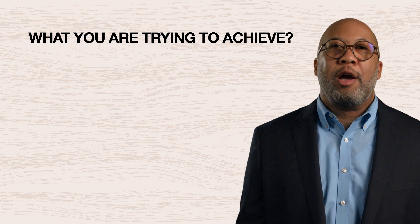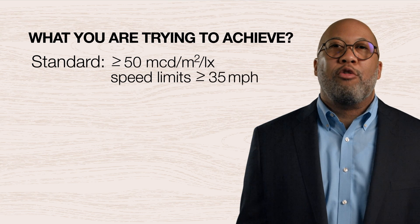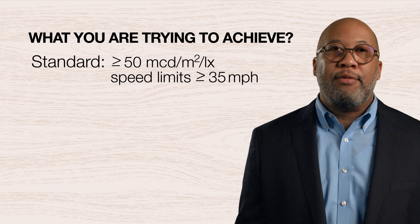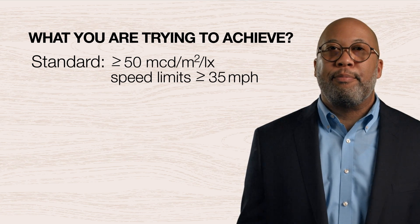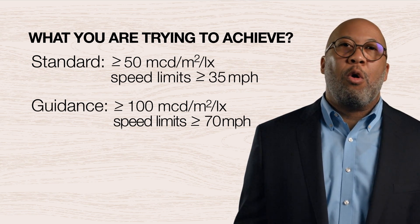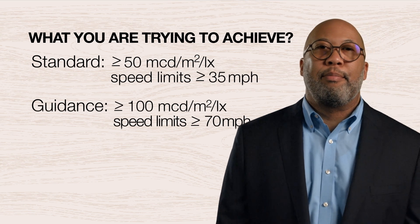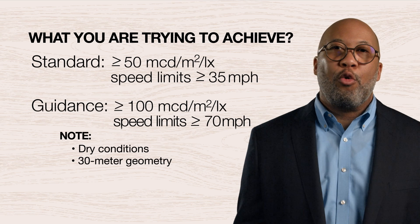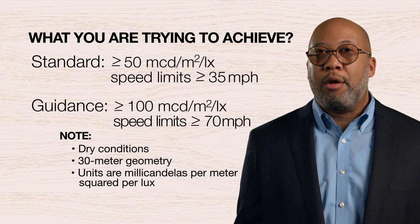Let's briefly discuss what you are trying to achieve with the maintenance method. The MUTCD standard requires your method to be designed to maintain pavement marking retroreflectivity at or above 50 on roadways with speed limits of 35 mph or greater. The guidance recommends your method also maintain a higher minimum level of 100 on roadways with speed limits of 70 mph or greater. These retroreflectivity levels are measured under dry conditions at 30-meter geometry and have units of millicandelas per meter squared per lux.